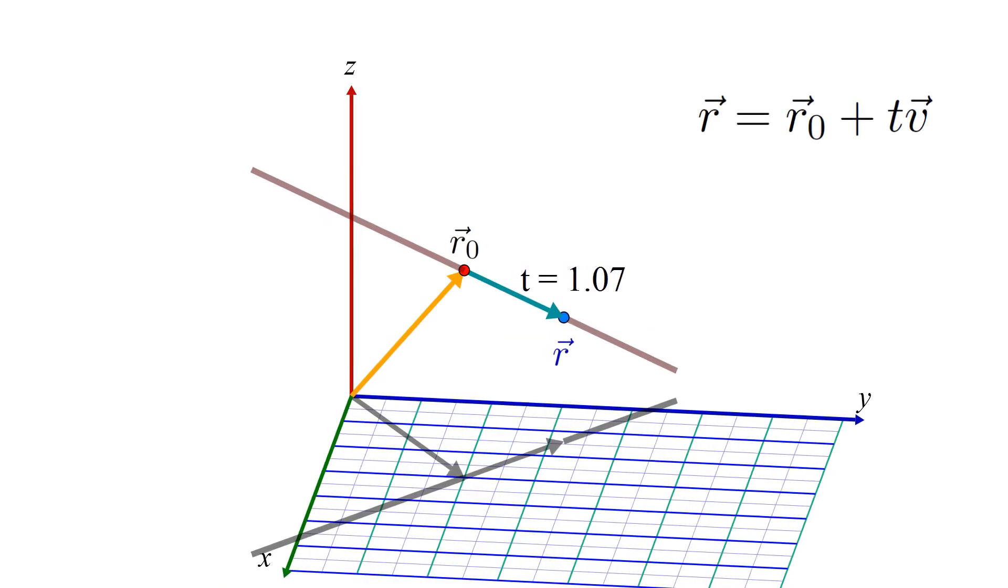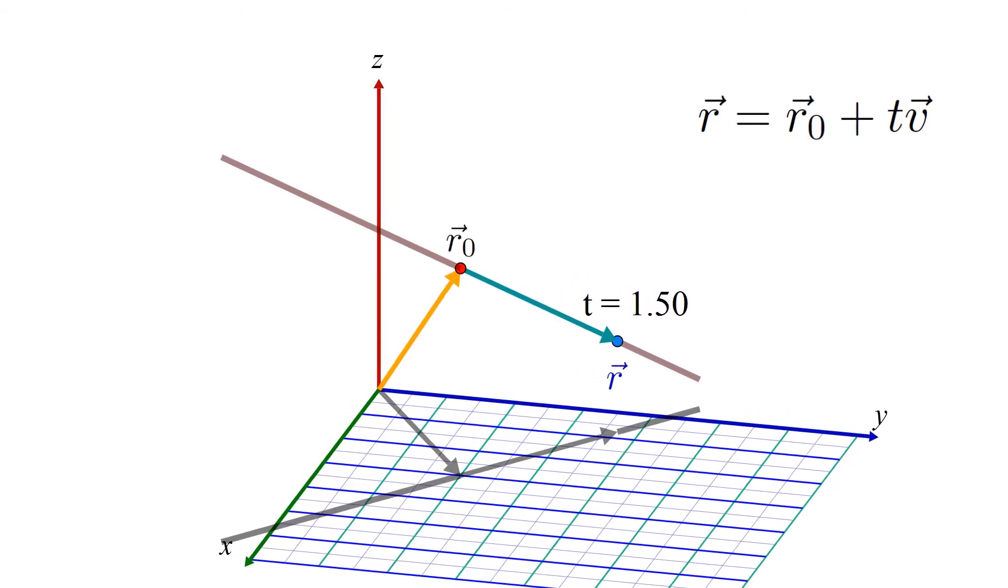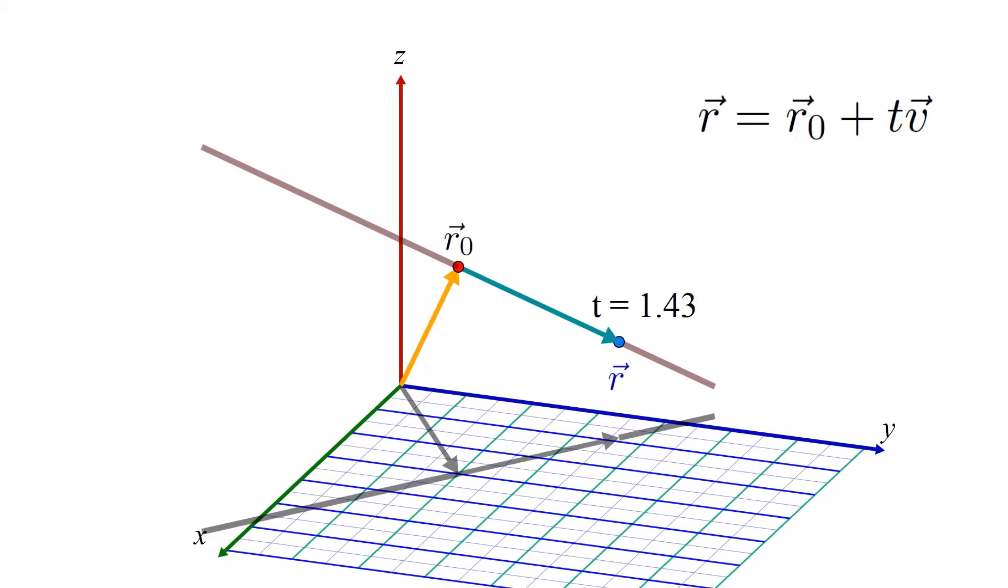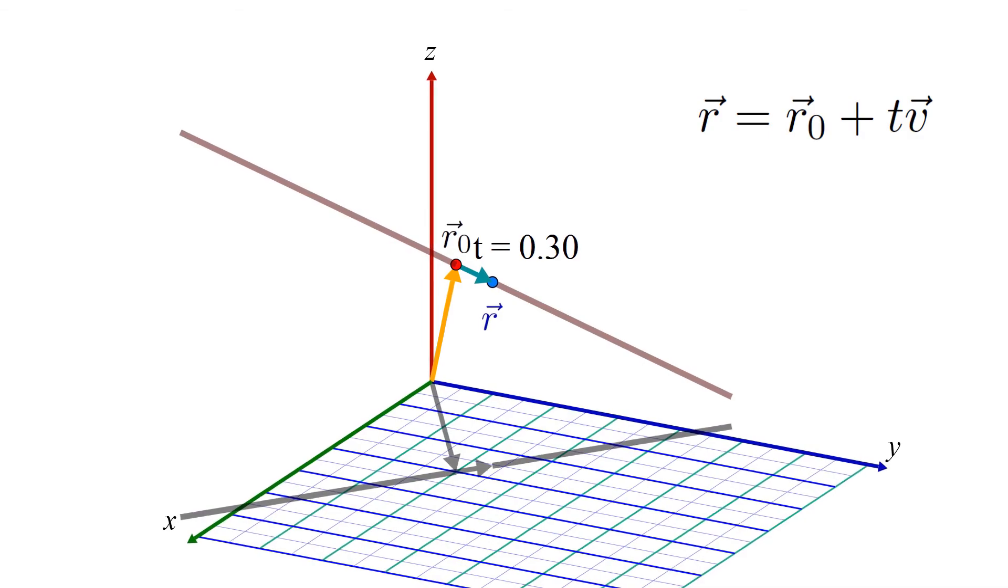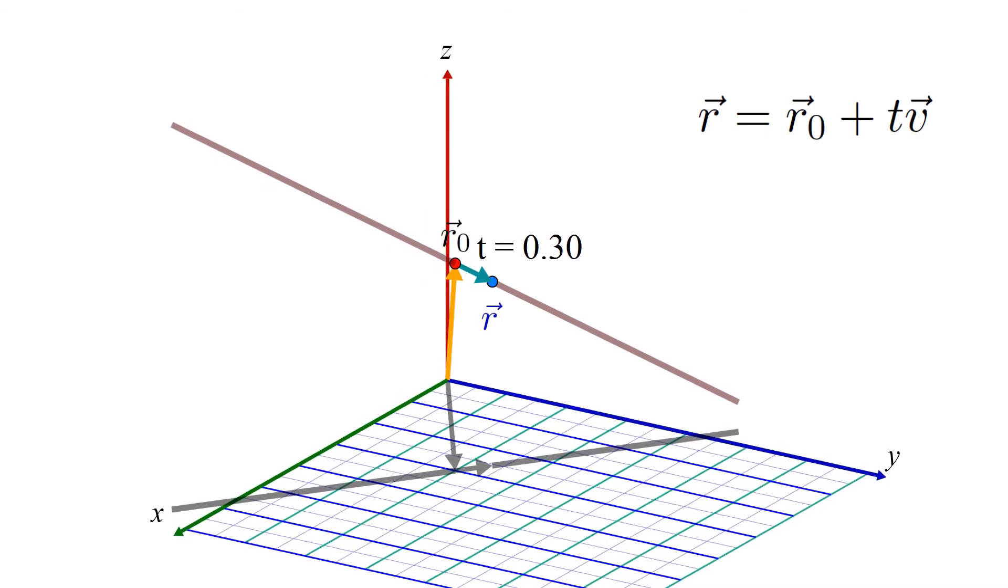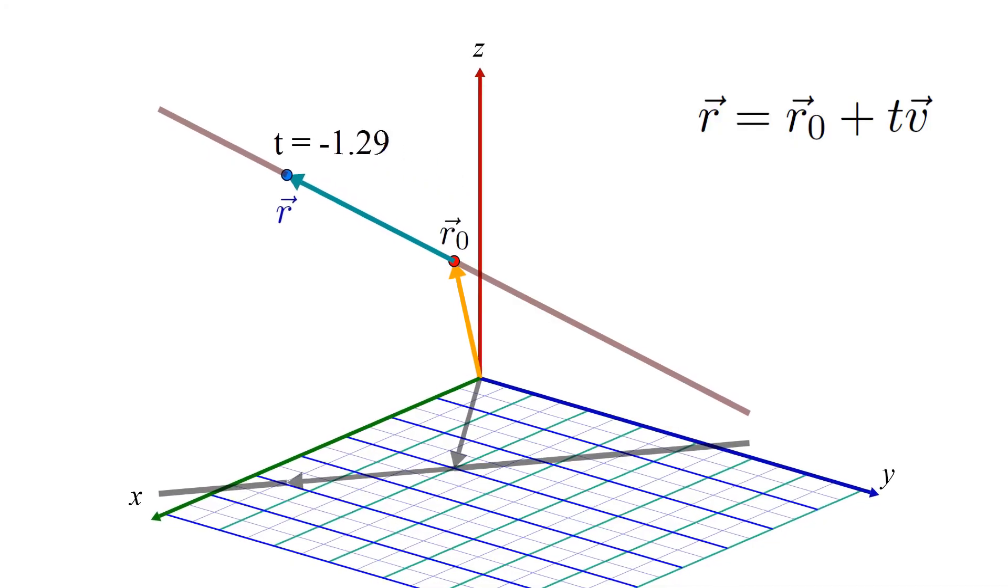One thing to get clear here is that although r0 and v are fixed vectors that define the shape of the line, the scalar t is actually a free wildcard for which you can plug in literally any real number. Note that changing the value of t doesn't change the line, it just changes which point on the line you are currently looking at.